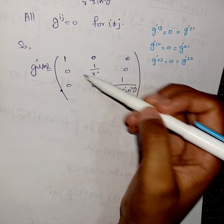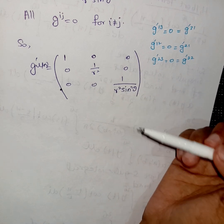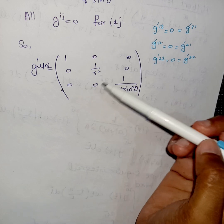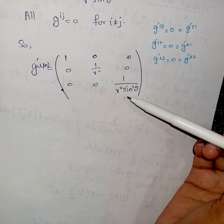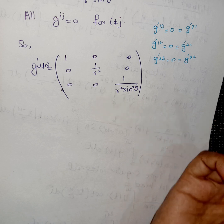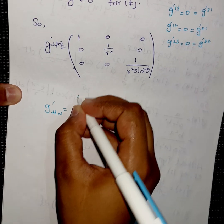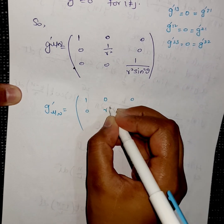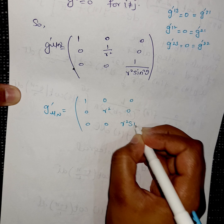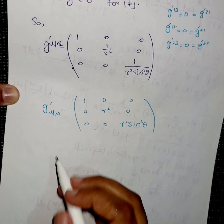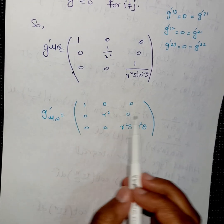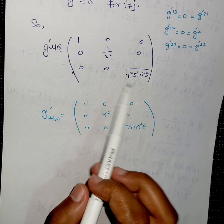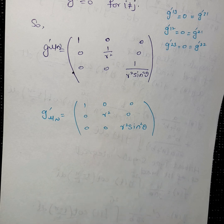So the diagonal entries of g'_μν are 1, r², and r² sin²θ. An important point: if we have a diagonal metric tensor, its inverse is simply the inverse of each diagonal entry, since all off-diagonal entries are zero. Therefore the inverse metric tensor g'^μν has diagonal entries 1, 1/r², and 1/(r² sin²θ). That is all for this lecture — I hope you understood. Thank you.